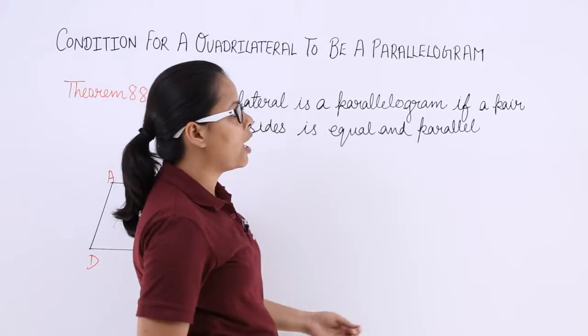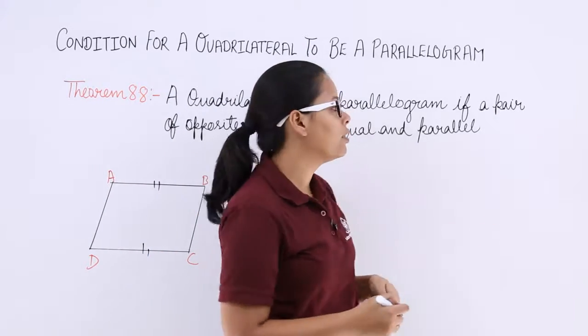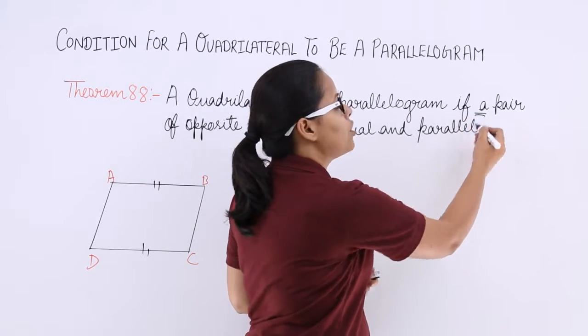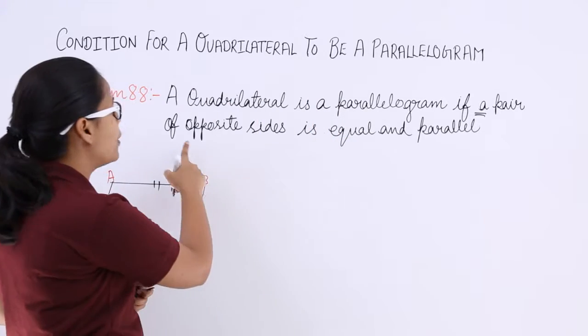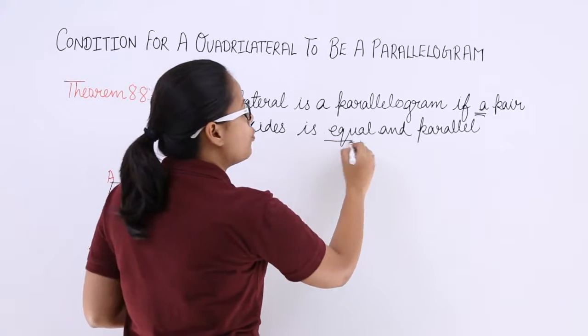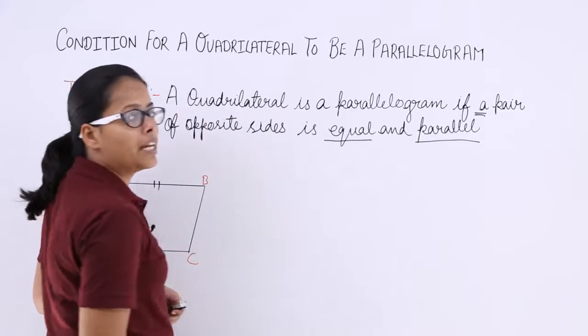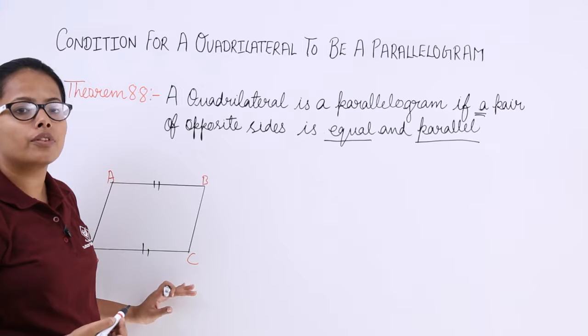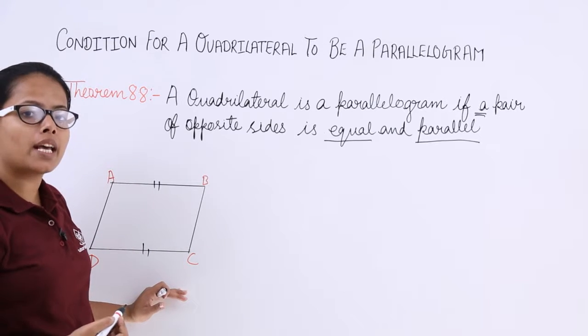A quadrilateral is a parallelogram if a pair of opposite sides is equal and parallel. You need to prove both of these things simultaneously, that pair of sides are equal as well as parallel.